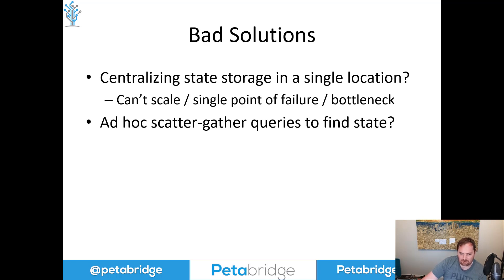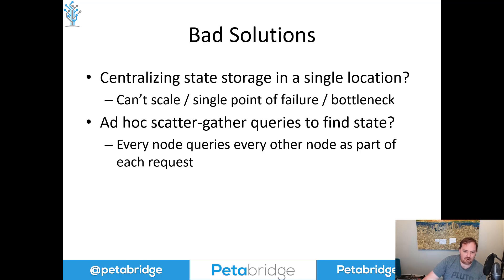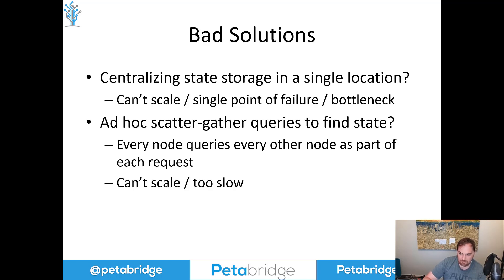The next approach a developer might consider is an ad hoc approach to trying to determine where state is located. Rather than maintaining a consistent system for knowing where an entity's state might be stored at any given time, you let it be somewhat self-determining and therefore a little bit random and unpredictable. In which case, every time we need to find state, we have to essentially query the global state of the system via a scatter-gather type messaging interaction. The obvious problem here is that every node queries every other node as part of every request. If the number of requests inside your system is anything other than a very small number, this is going to be very chatty, very slow, and it's going to flood the network with a bunch of nonsense traffic.